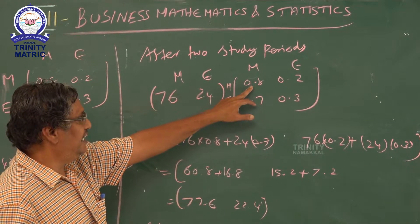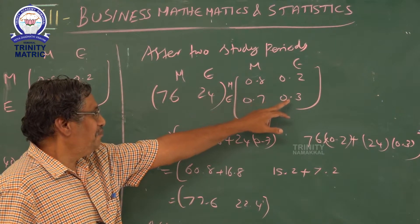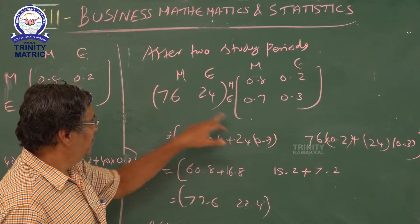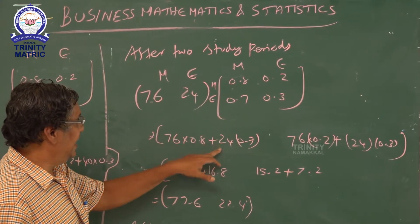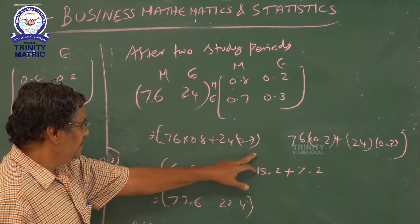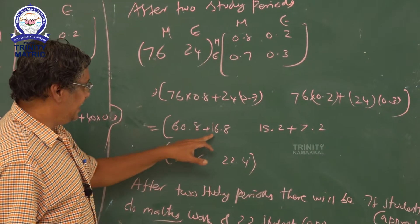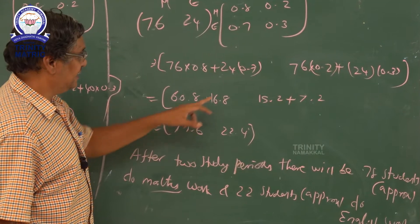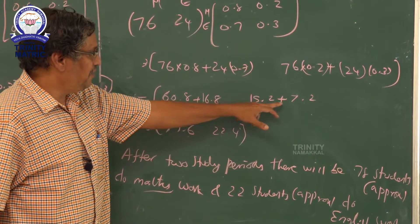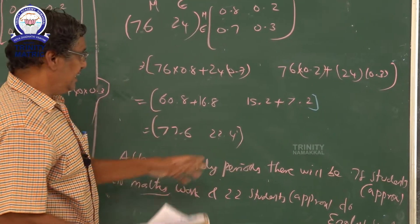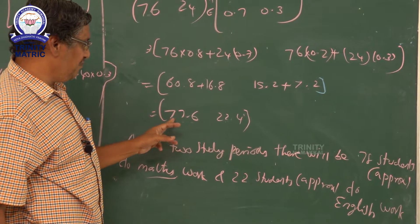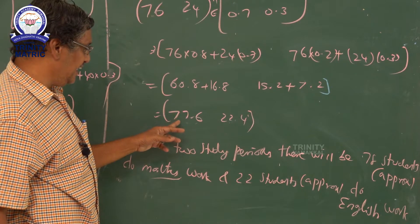For the second study period, we use [76, 24] with the same transition probability matrix: math 0.8, English 0.2 / math 0.7, English 0.3. First row, first column: 76 × 0.8 plus 24 × 0.7 = 60.8 plus 16.8 = 77.6 for math. First row, second column: 76 × 0.2 plus 24 × 0.3 = 15.2 plus 7.2 = 22.4 for English. Since 77.6 is more than 0.5, we round up: 75 students do math work.